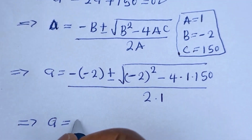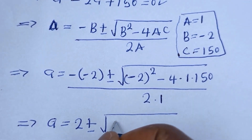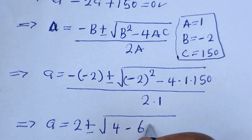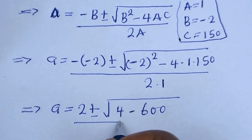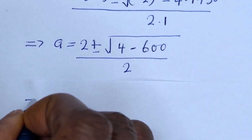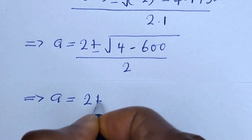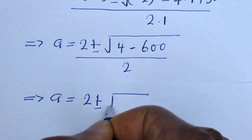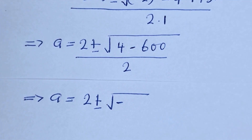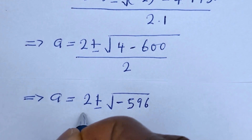A is equal to minus times minus 2, which is 2, plus or minus square root of (minus 2) squared — that is 4 — minus 4 multiplied by 1 multiplied by 150, that is 600, over 2 multiplied by 1, which is 2. So A is equal to 2 plus or minus square root of (4 minus 600), that is minus 596, over 2.